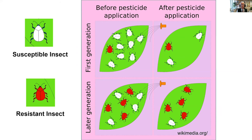If we put that in a little graphic, this is what it looks like. Before application, the first generation has a lot of susceptible insects shown in white, and it has that resistant insect which already had resistance before the insecticide was applied. Then you apply the insecticide and kill almost all of the susceptible insects, but the resistant insect is left to reproduce. In the next generation there are more resistant insects. You spray again, kill off the weak susceptible ones, and over time you end up with a population that is resistant — the population has evolved resistance because of the selection you were applying.